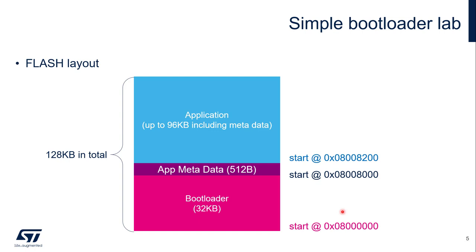This is the flash layout we're going to have for the bootloader and application. We reserve 32K bytes for the bootloader. As a very simple bootloader we won't consume such a big area, but later on when we have a more enhanced bootloader the code size will be bigger. Currently we reserve this size for the bootloader, and the application will start from address 0x08008200. Between these two, we reserve 512 bytes for metadata for the application.